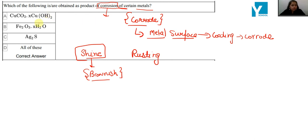If we look at this, CuCO3·Cu(OH)2. When the copper metal is corroded, which is the final product. Here, air and water are very important for corrosion or rusting.